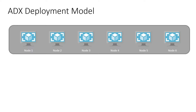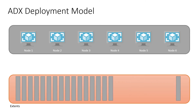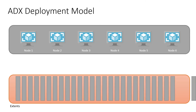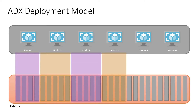Here we have a cluster of six nodes — six virtual machines — and a multitude of extents. Those extents are scaled out, or distributed, across those nodes. Each node is assigned an extent so it can respond to queries with those extents, and each extent represents a portion of data on a table.